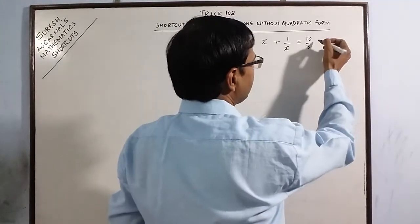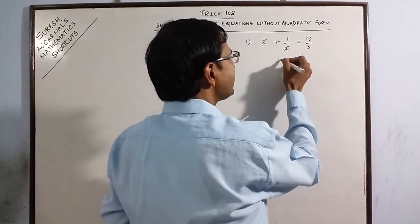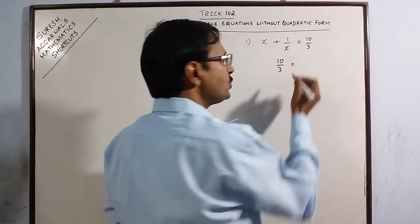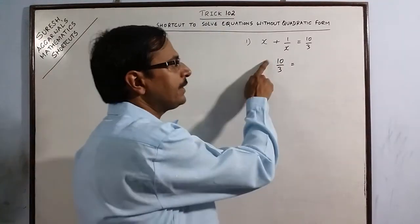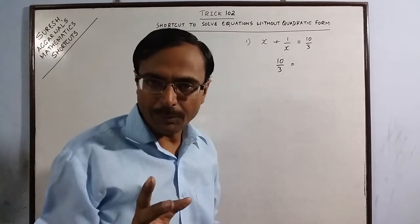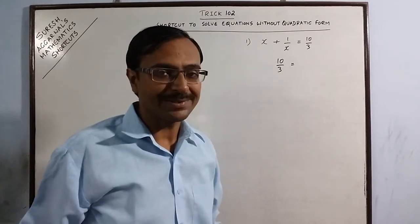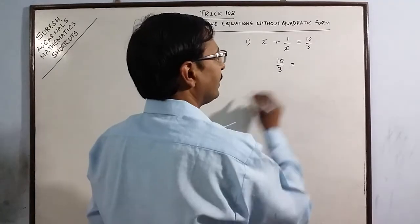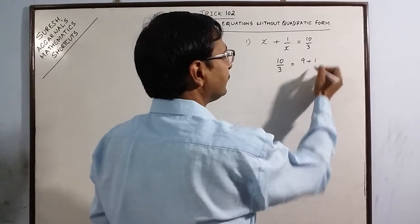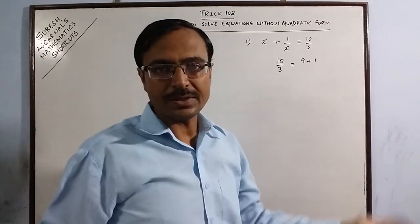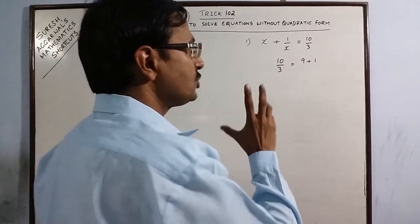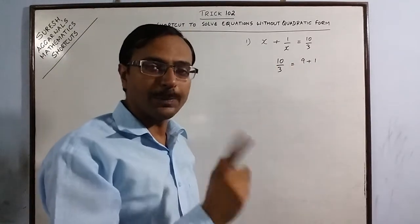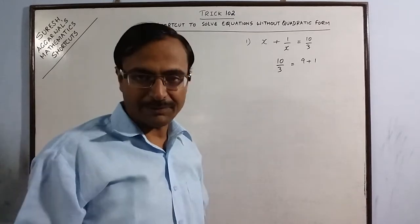So just observe 10 by 3 now. Now this 10 by 3, what you try to do is, in such cases, you try to write the numerator 10 as a sum of two perfect squares. Like here, you can write 10 as 9 plus 1, 9 is 3 square and 1 is 1 square. So you write, split this numerator into two parts, both parts should be a perfect square.